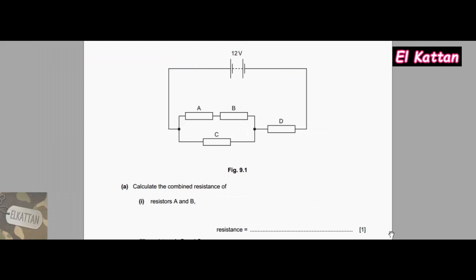For part (a), calculate the combined resistance of resistors A and B. First, we highlight both resistors A and B. Each resistor has 6 ohms. Both resistances are connected in series, so R_equivalent = R_A + R_B = 6 + 6 = 12 ohms.